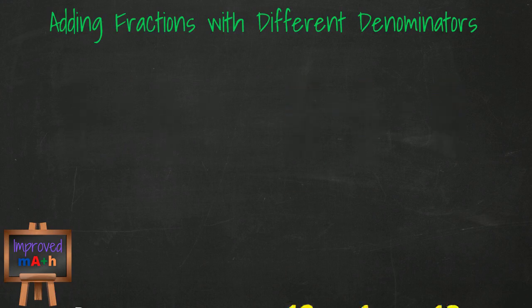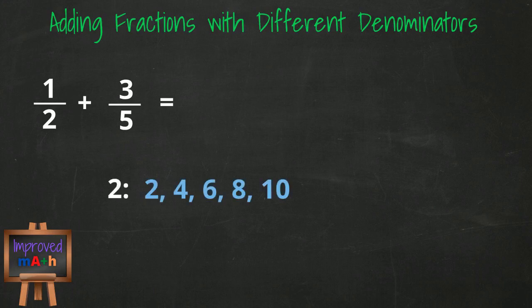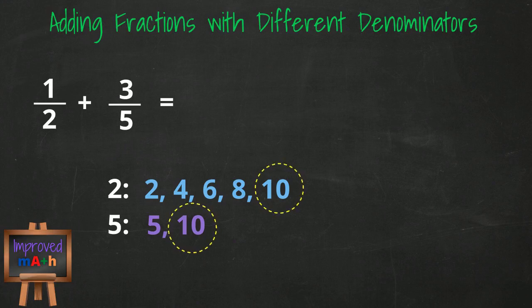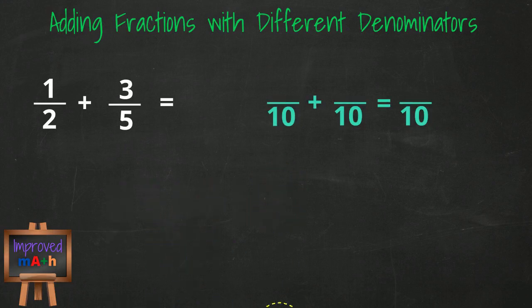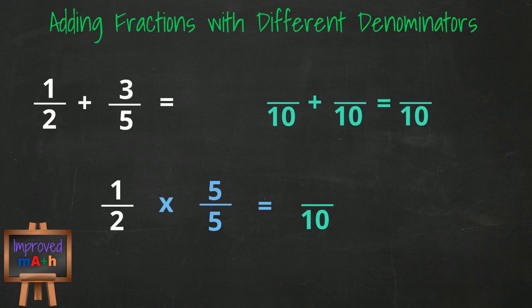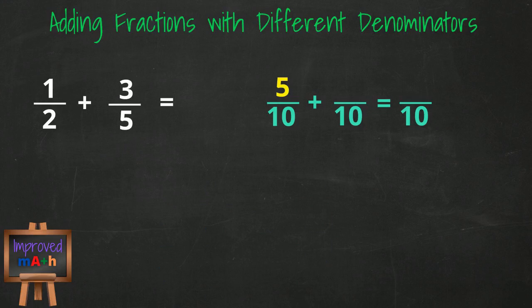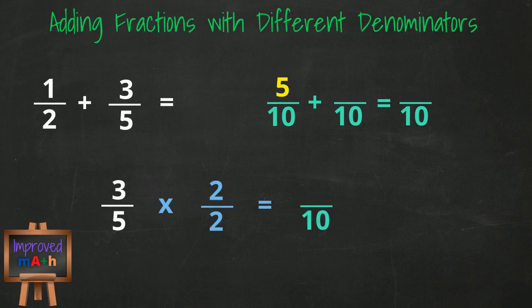Last example: 1 half plus 3 fifths. Let's list out a few multiples of 2 and 5. Multiples of 2 are 2, 4, 6, 8, 10. Multiples of 5 are 5 and 10. So 10 is our lowest common multiple and our new denominator. We convert 1 half to something over 10 by multiplying 2 times 5, and since we multiply the denominator by 5, we multiply the numerator by 5 and get 5 over 10. We convert the second fraction to something over 10 by multiplying the denominator by 2, then multiply the numerator by 2 and get 6 over 10. We add the numerators — 5 plus 6 — and get 11 over 10. We could also state this as 1 and 1 tenth.